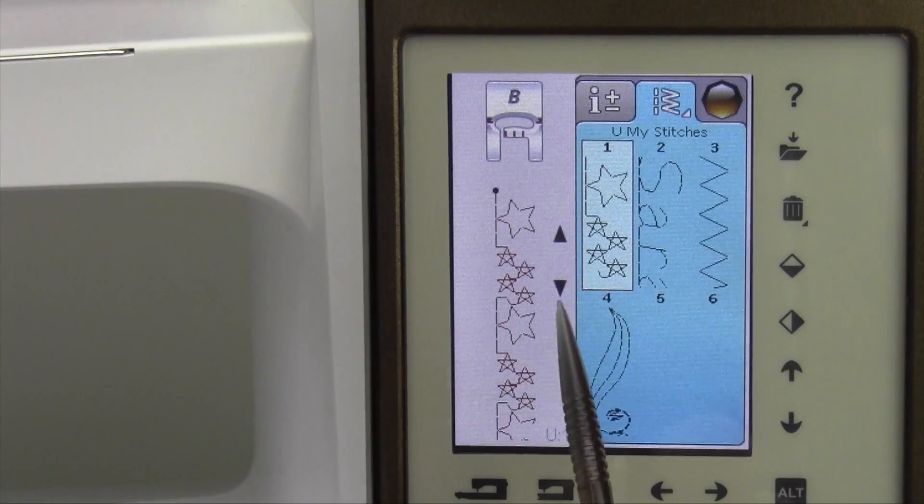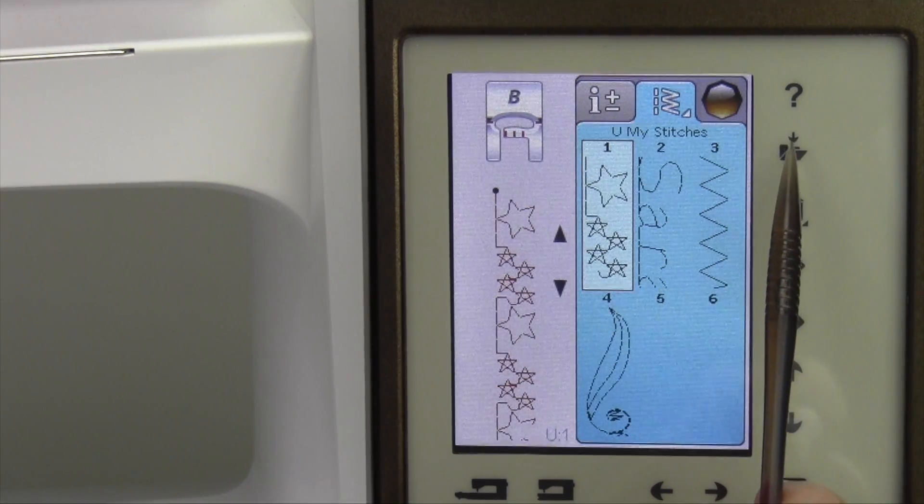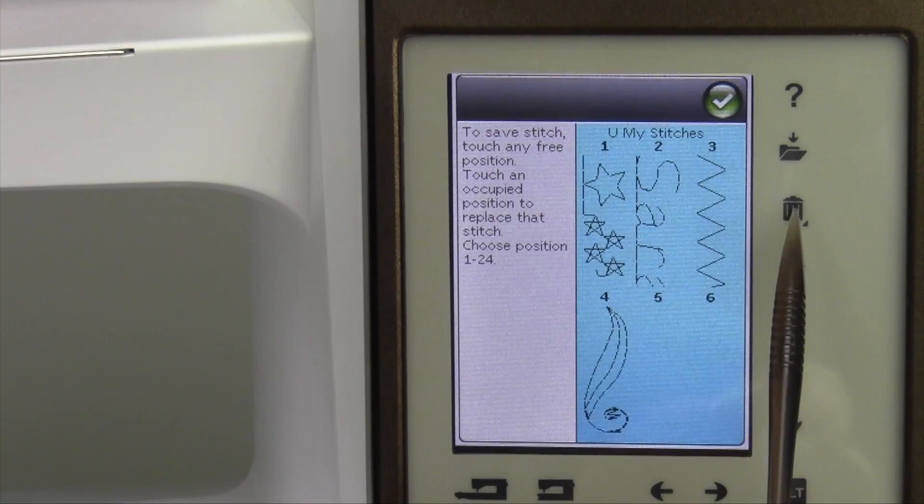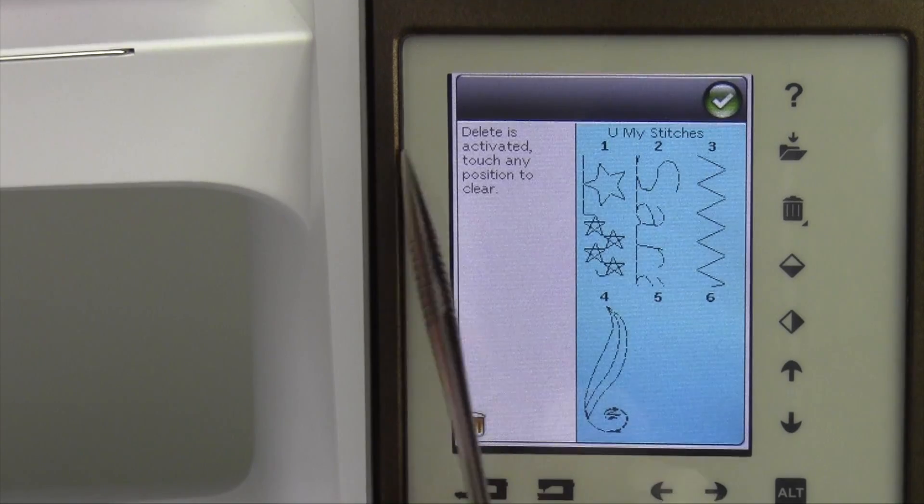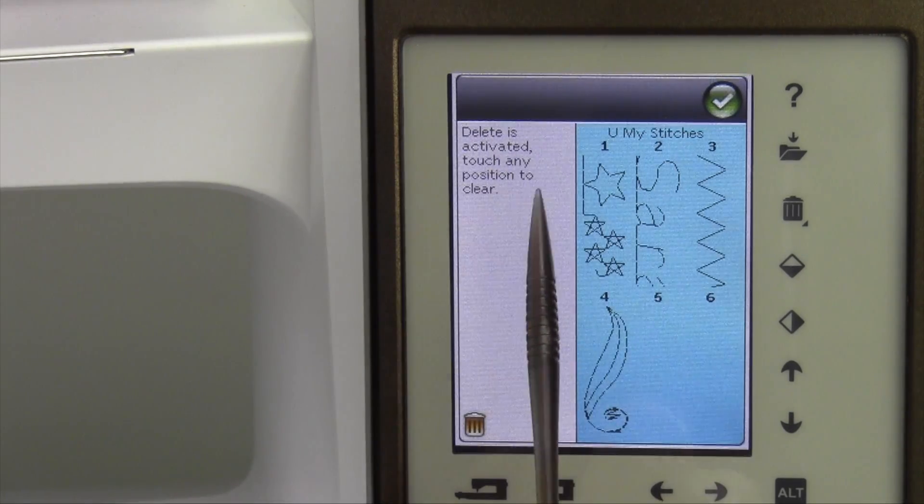If you want to delete what's in your My Stitches memory, go ahead and touch the arrow into the folder, and then touch the trash can. Now you have a little trash can showing. Delete is activated. Touch any position to clear it.